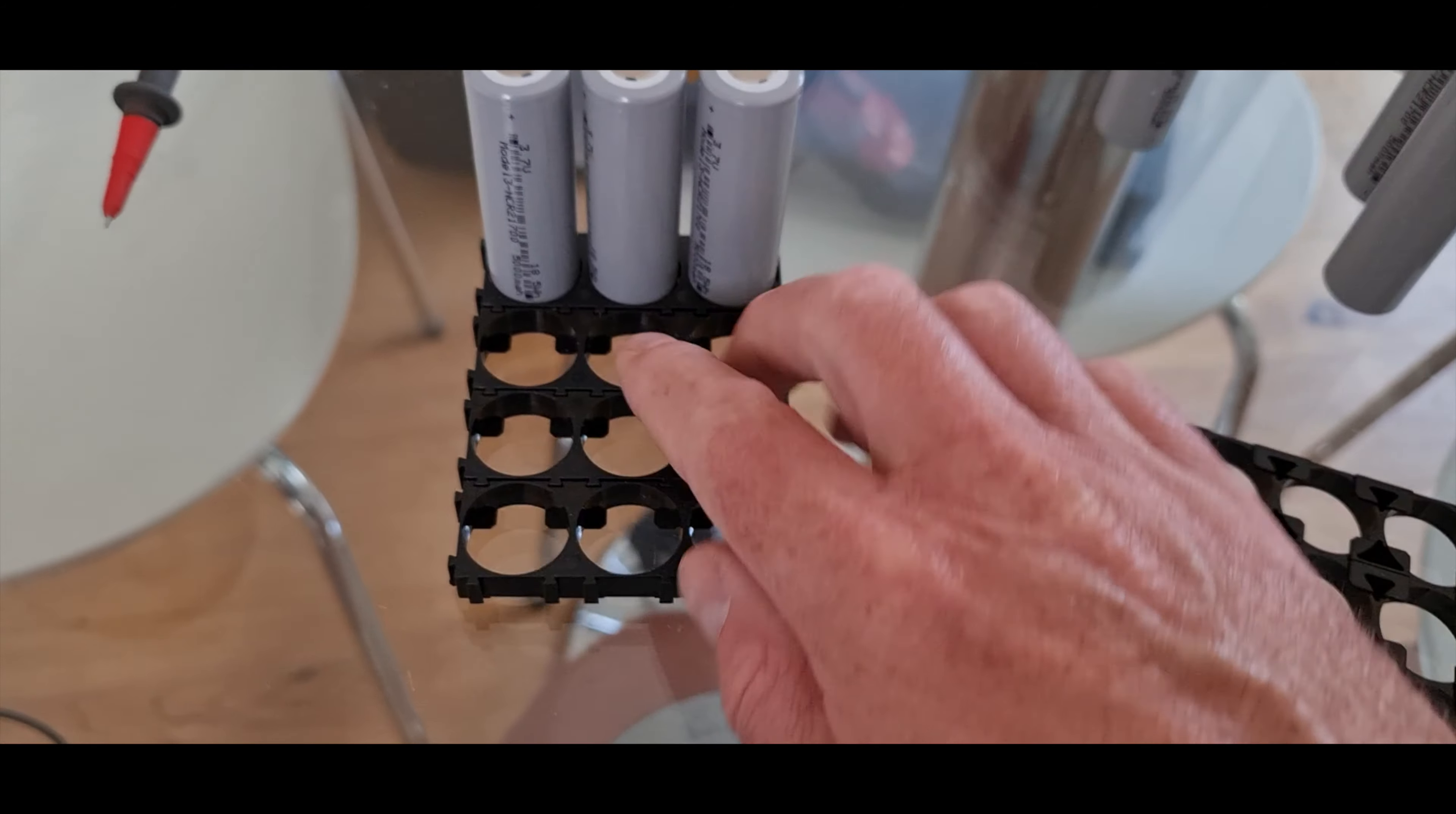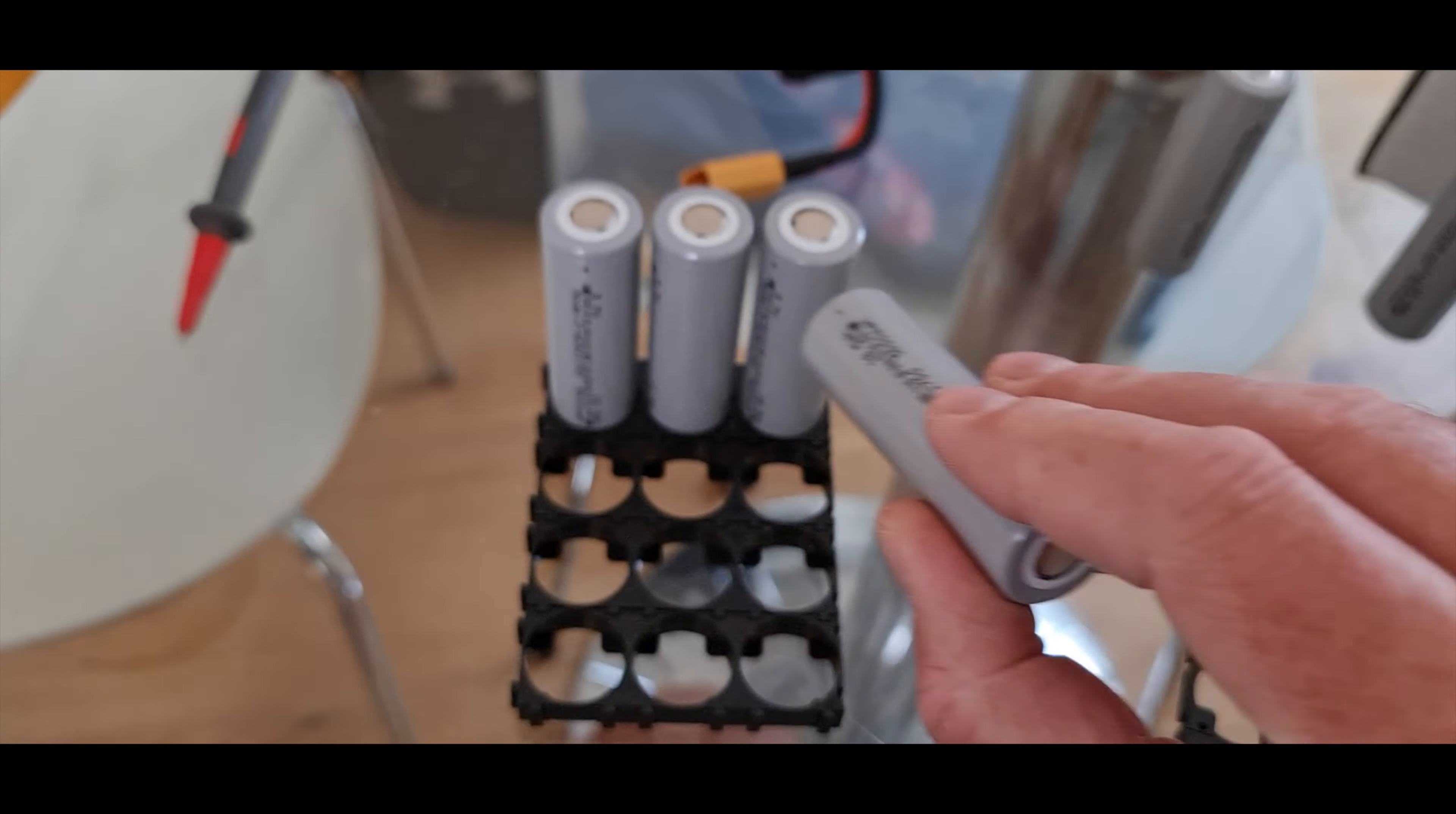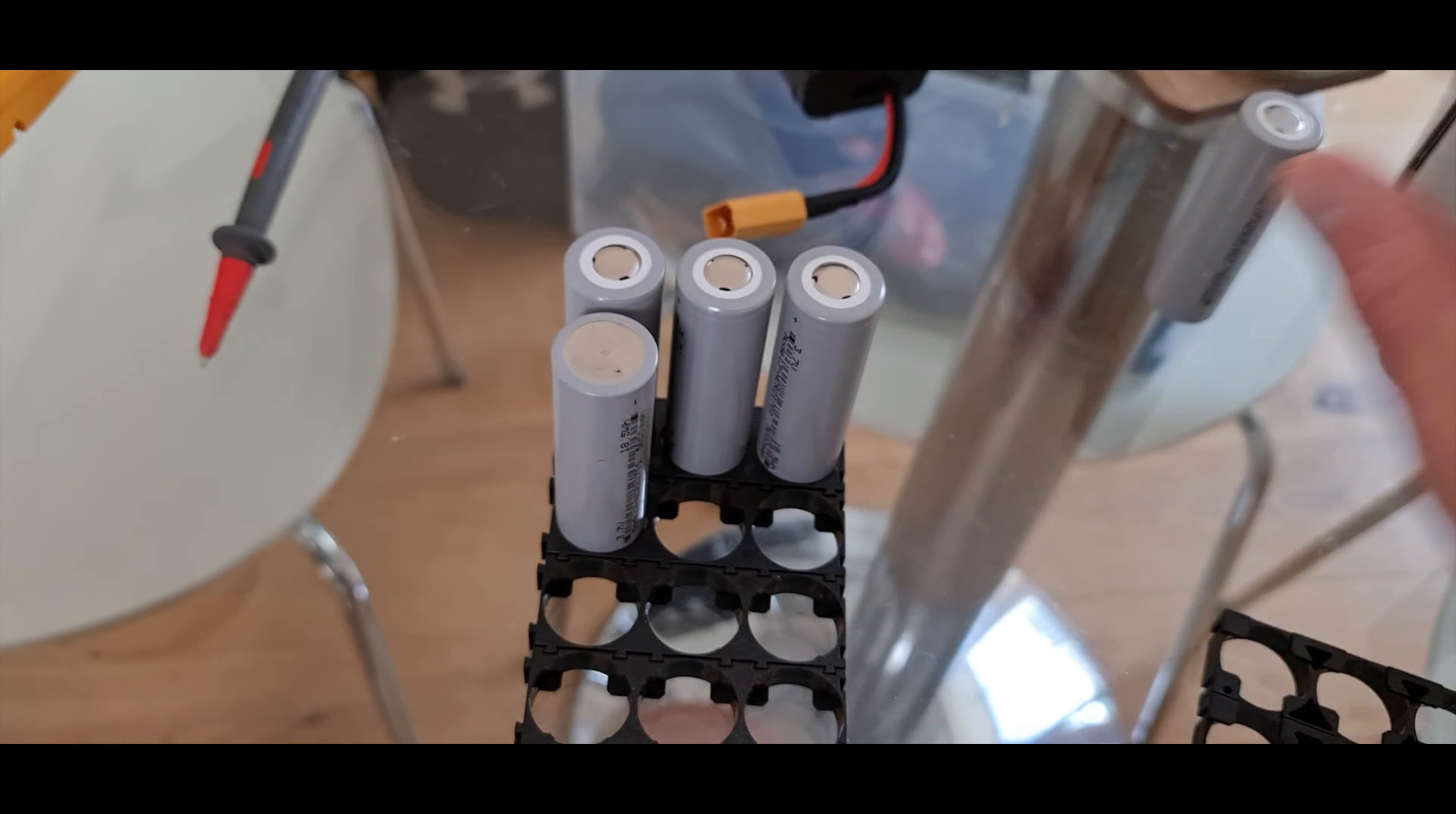We have these battery former type things that are really useful for building batteries. These things snap together, you can just make your own formations. I've got three that way around and then I'm going to do the other three that way around.